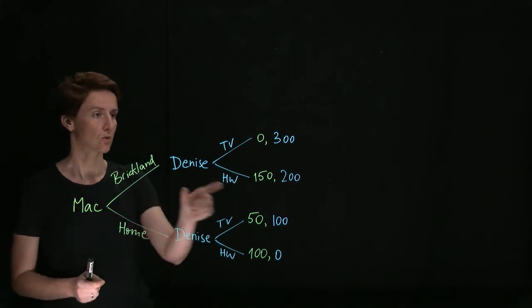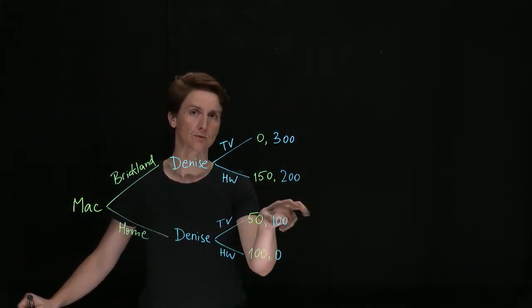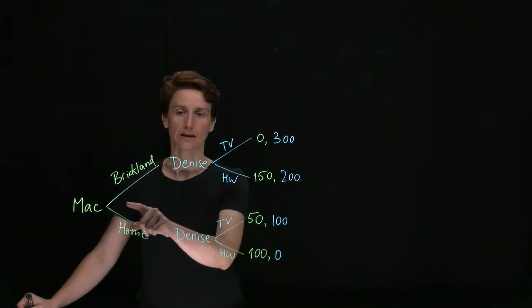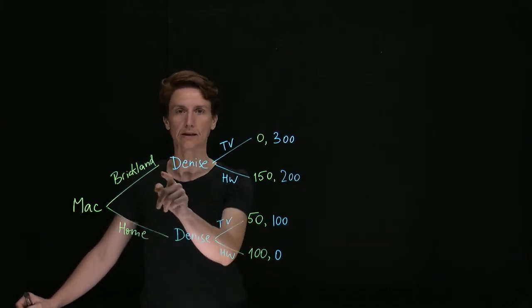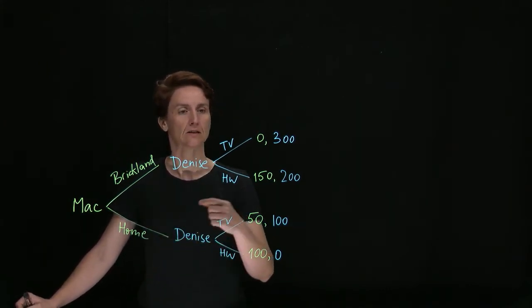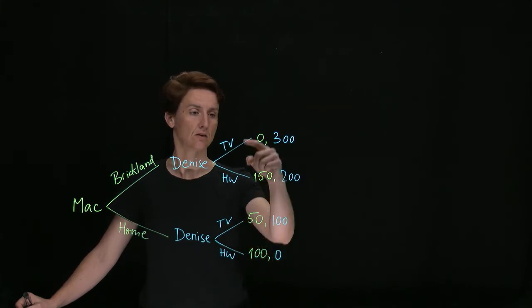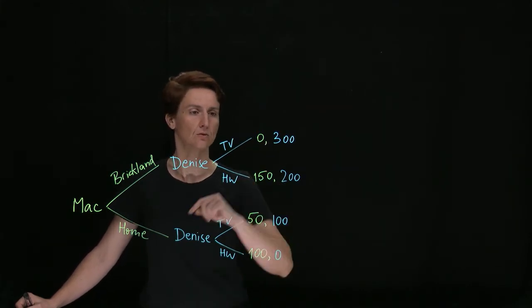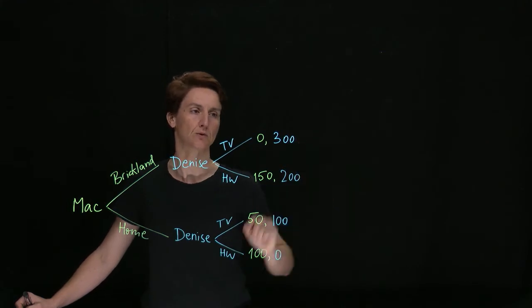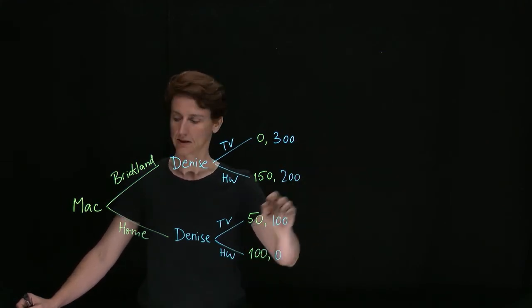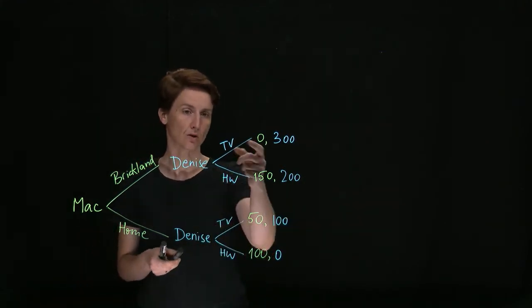So we'll work backwards from the last mover, in this case Denise. If Mac takes her to Brickland on Saturday, then on Sunday her options will be to watch TV or do her homework, and the payoffs that come with that are 300 and 200, so she will choose to watch TV.